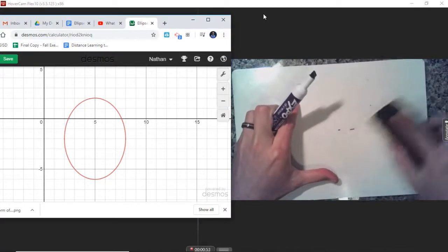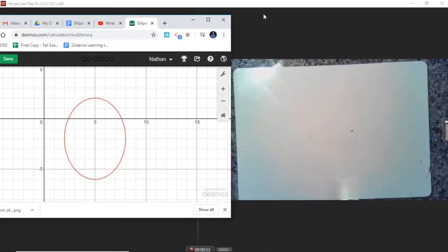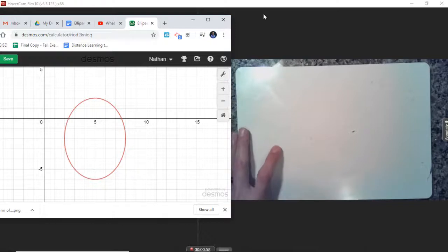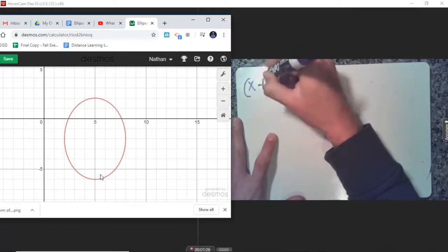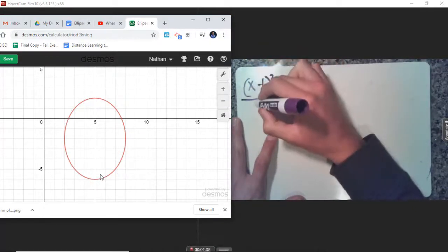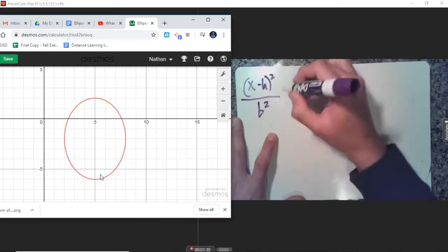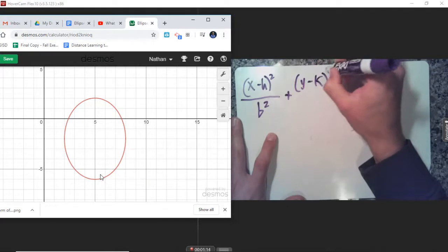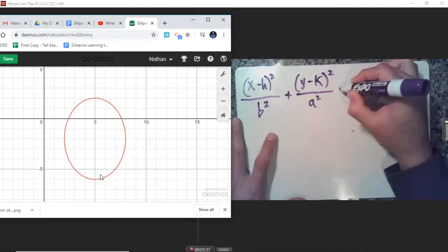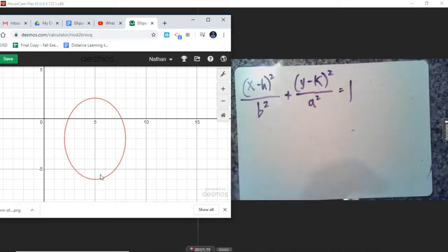All right, so let's go ahead and write the standard form of the equation. And again, in this particular example, since my major axis is vertical, A and B will flip. So we've got (X - H)² over B² plus (Y - K)² over A² equals 1. That's the standard form of the equation. Now we just need to fill in everything.